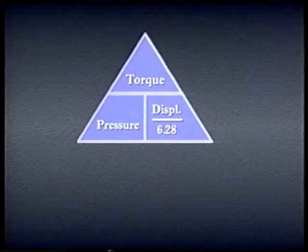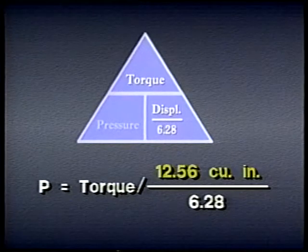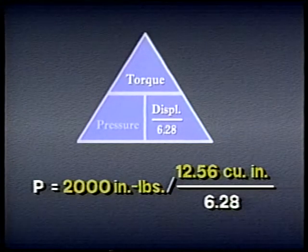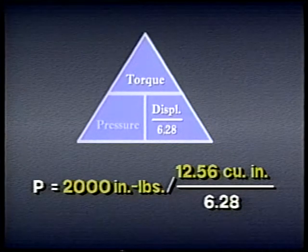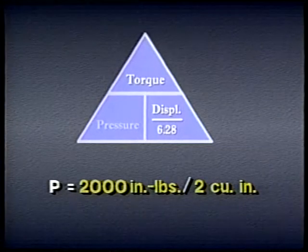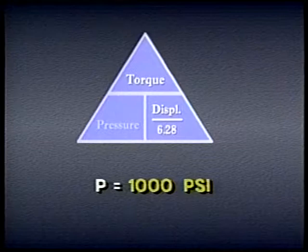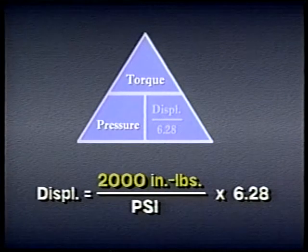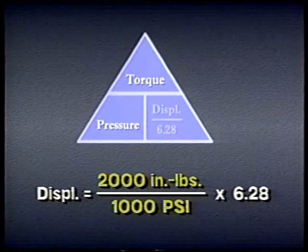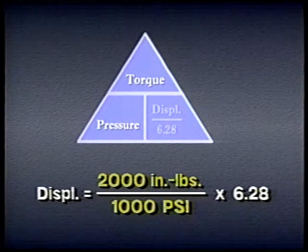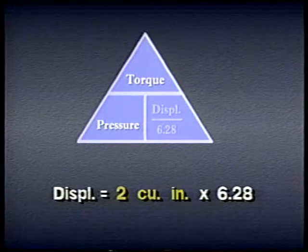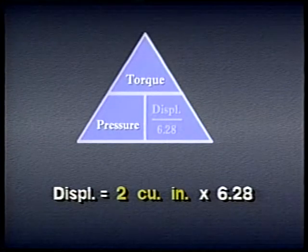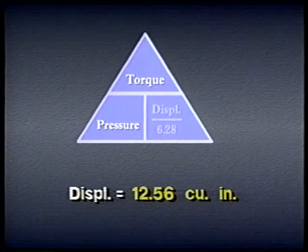Suppose we want to know how much pressure must be applied to a motor with a displacement of 12.56 cubic inches to produce 2,000 inch-pounds of torque. We divide 12.56 by 6.28 to get 2 cubic inches, then divide 2,000 inch-pounds by 2 cubic inches to get 1,000 PSI. Or, if we want to find the displacement needed to produce 2,000 inch-pounds at 1,000 PSI, we divide 2,000 by 1,000 to get 2 cubic inches, then multiply by 6.28 to get 12.56 cubic inches.